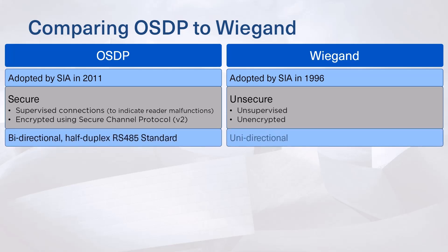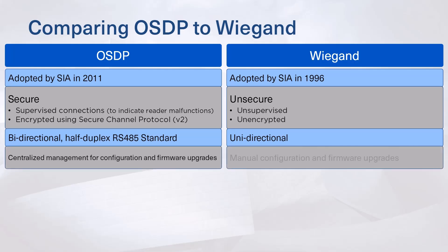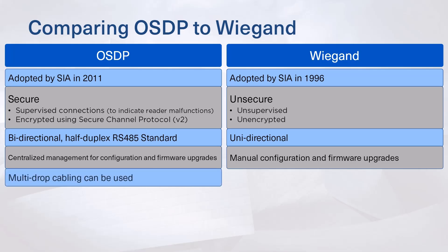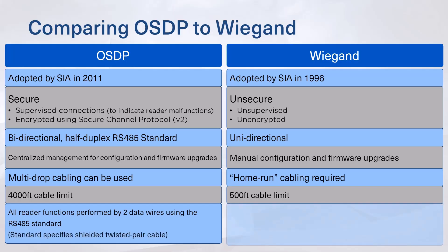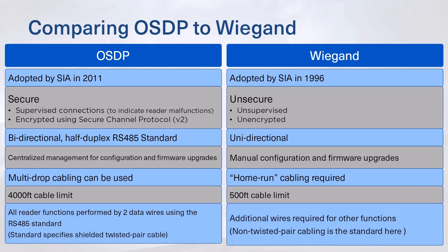Data traffic is bidirectional over the half-duplex RS-485 standard, enabling centralized management for configuration and firmware upgrades. With OSDP, multi-drop cabling can be used as opposed to home run cabling for each reader. Additionally, OSDP cable length limits are eight times greater than traditional wiring, and OSDP uses only two data wires, whereas legacy protocols could require 12 or more for similar functionality.